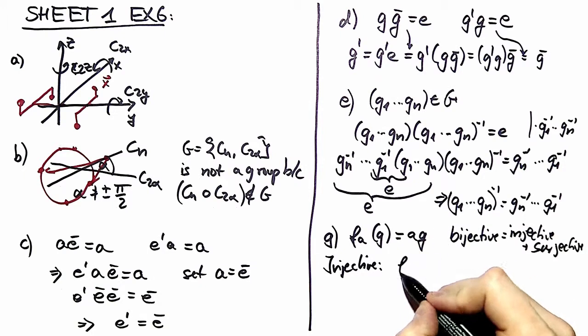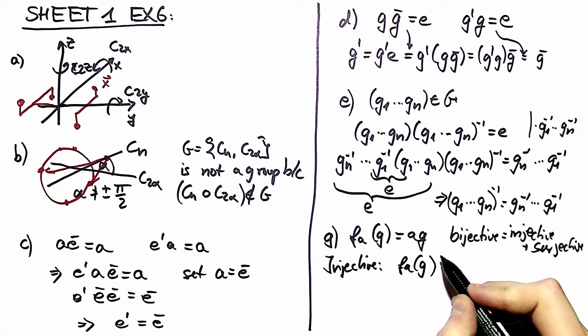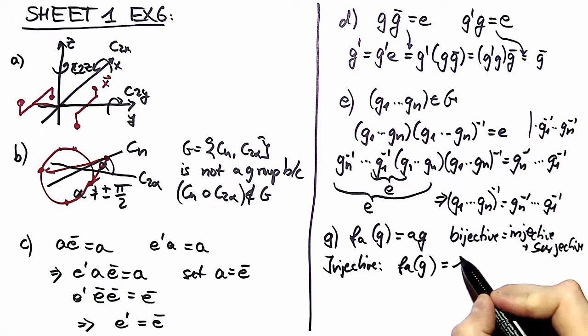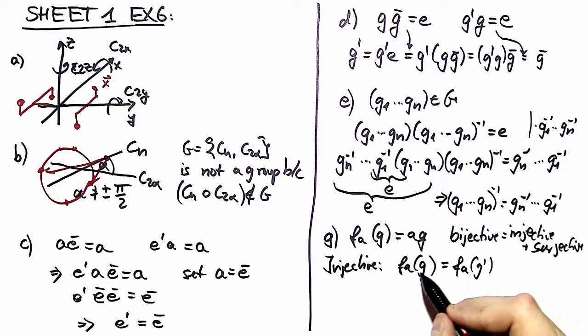We say if we apply f a to two different group elements g and g prime and those match, g and g prime must match. This equation implies that a g equals a g prime. Now if we left multiply with a to the minus one, which we are allowed because there is such an element in the group, we arrive at g equal g prime and we showed injectiveness.